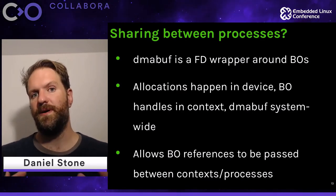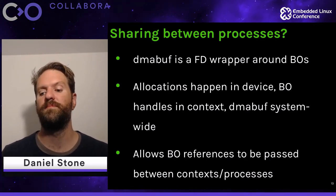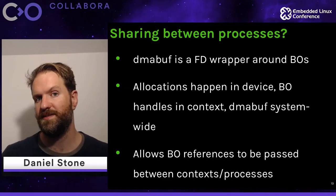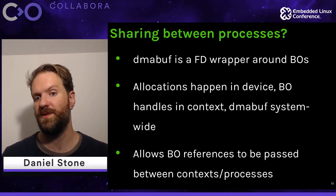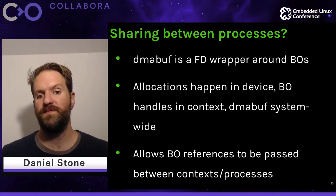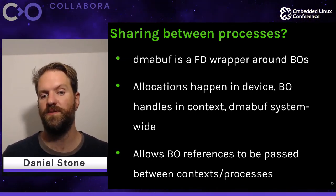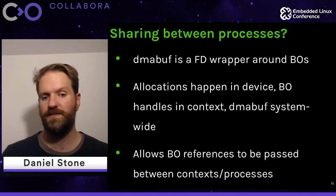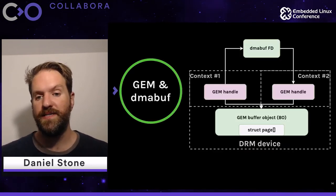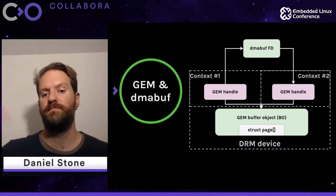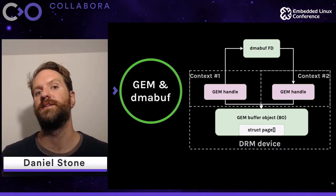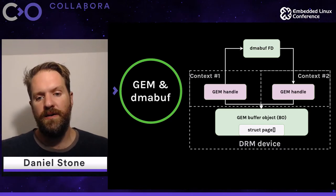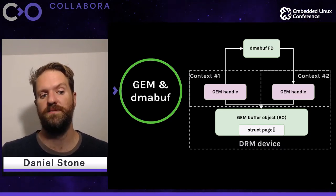Handles are local to the DRM context that was created. Rather than sharing contexts — which would make the whole system a single context with multiple clients — where we landed was with DMA-BUF. It's relatively straightforward: it allows a reference to a BO to be passed between anything — different contexts, processes, whatever. Conceptually it's just hoisting that abstraction one level further; it points down to an actual material GEM buffer object.